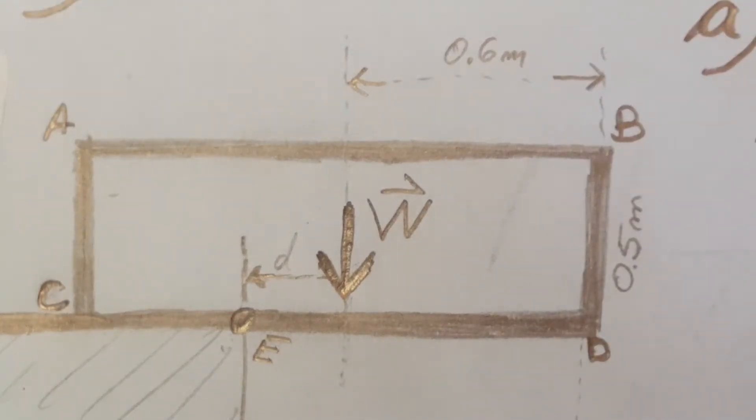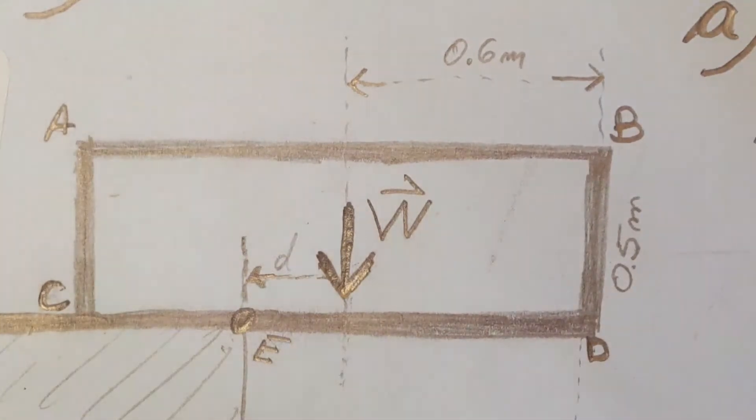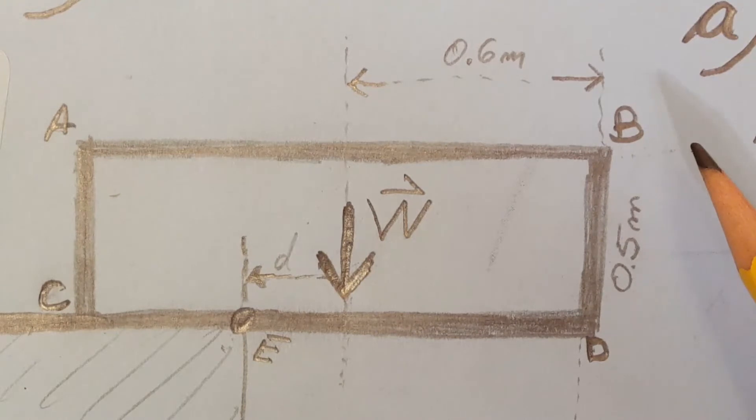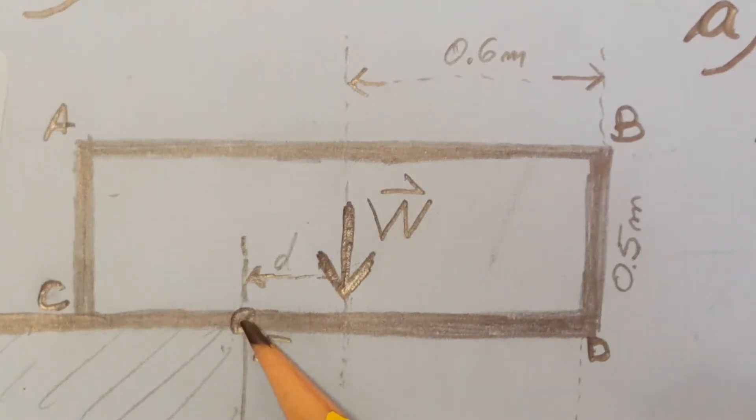Now in part B, they want us to determine the smallest force applied at point B right here that creates the moment of equal magnitude and opposite sense that we found at point E.